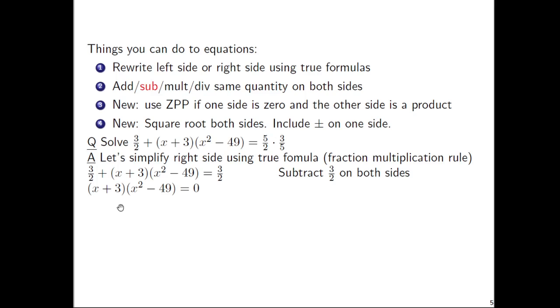Now take a look at the type of equation we have. We have (x + 3)(x² - 49) = 0. This is a good time to use a zero product property, right? So there's a zero on one side and a product on the other. So we split this up and have x + 3 = 0 or x² - 49 = 0. Don't forget that word or.